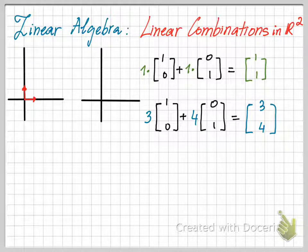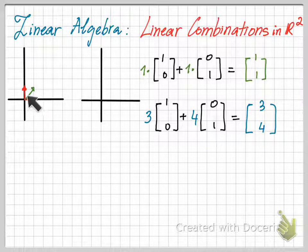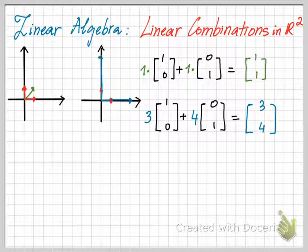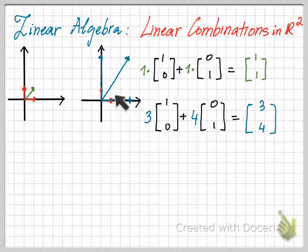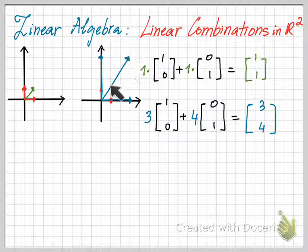Geometrically, the vector [1,1] is the sum of these two vectors. The vector [3,4] can be shown using these two blue vectors, and the sum of these two blue vectors gives us [3,4].